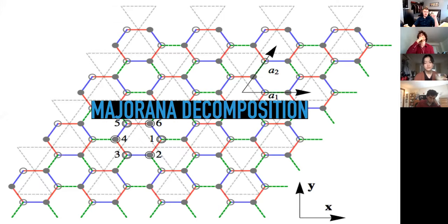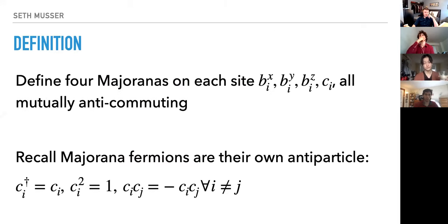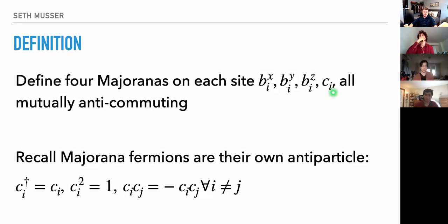We want to dive in to exactly solve this, and we do that through a Majorana decomposition. I'm going to be very precise here so that later, when I talk about the parton mean-field treatment, you'll believe me because I'll link it back to this. What Kitaev does is take each site and define four Majoranas on it.